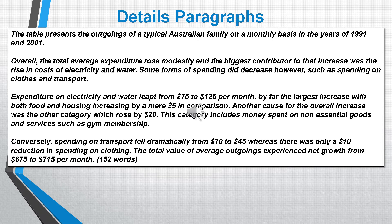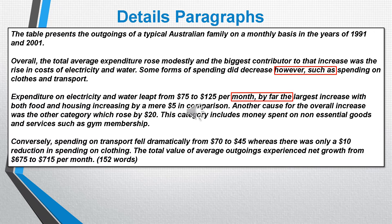Once more we've simply added facts and figures from the table and we've also managed to include comparisons where relevant and where it feels appropriate to do so. For example, the first of those paragraphs starts with 'by far the largest increase, with both food and housing increasing by a mere $5 in comparison.' So I've put comparisons in where it's appropriate. Now I want to look at complex sentences in these paragraphs. Students often get worried when they hear the word 'complex sentences,' however complex sentences doesn't mean it has to be complicated. As you'll see, we've got three examples here of complex sentences which aren't particularly complicated at all.